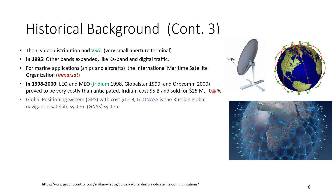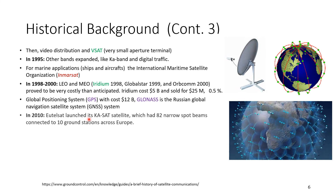Global Positioning System satellites are used not just for communication but for localization. The American GPS system cost 12 billion dollars. The Russian equivalent is GLONASS — the Russian Global Navigation System. Europe also developed Galileo, which went live in 2016. Around 2010, Eutelsat launched satellites with narrowband spot beams and multiple coverage zones, which we will discuss further.